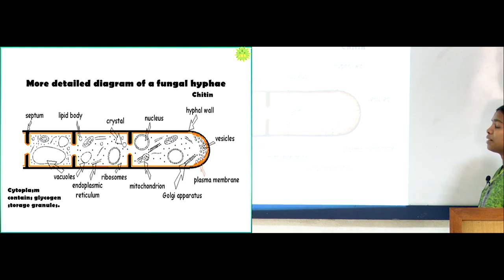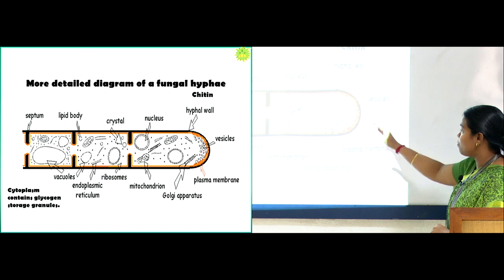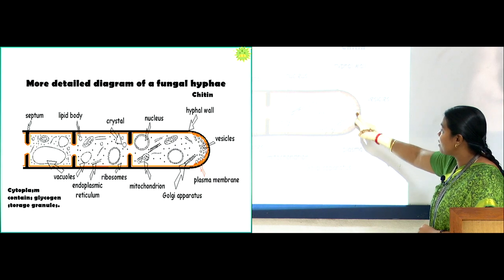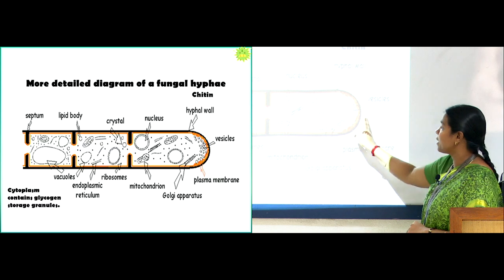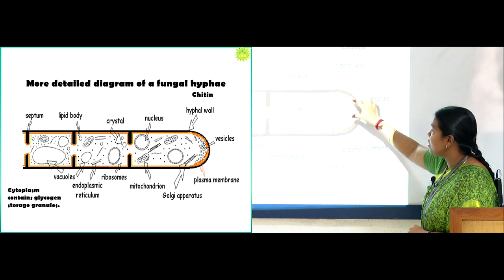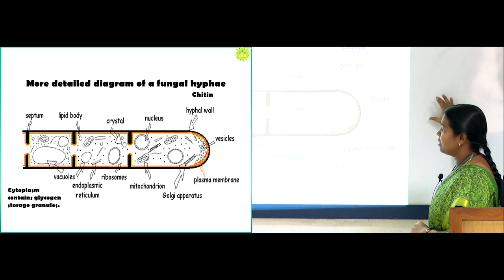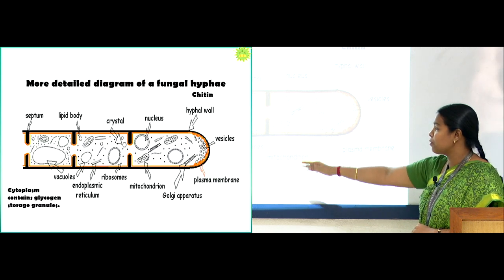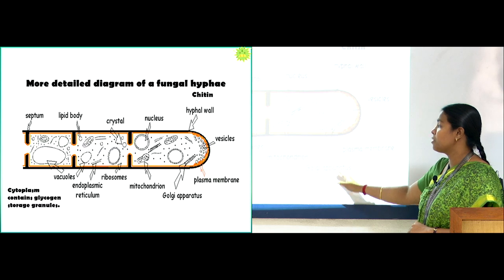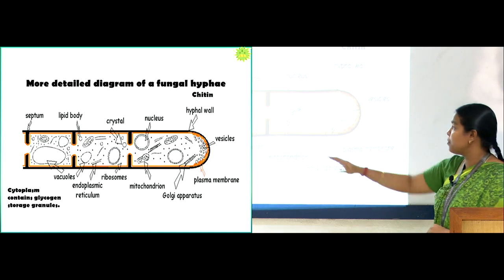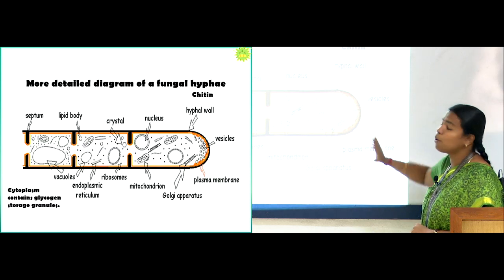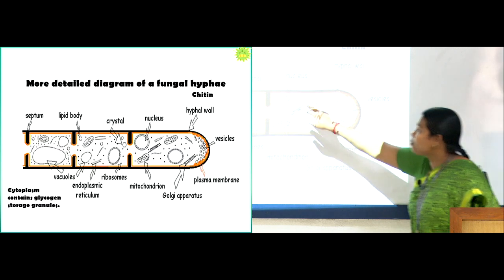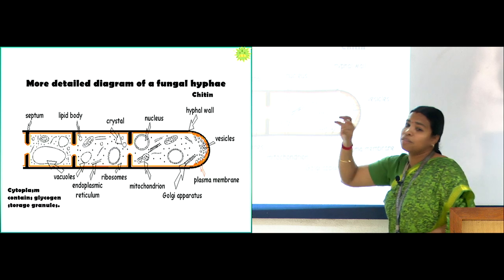The cell wall of fungi is made up of chitin, not cellulose. Vesicles sorted from the Golgi apparatus are filled with enzymes for growth of the fungal tip. Since fungi are eukaryotic organisms, they have endoplasmic reticulum, ribosomes, mitochondria, and Golgi bodies — similar to plants and animals — but the cell wall is chitin, not cellulose. Fungi also have a crystal body where poisonous toxins are stored.